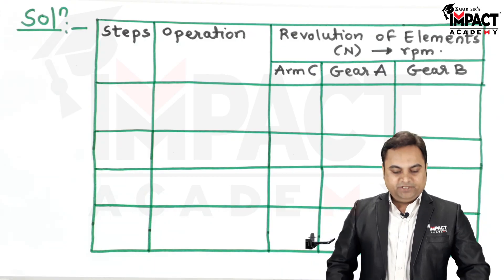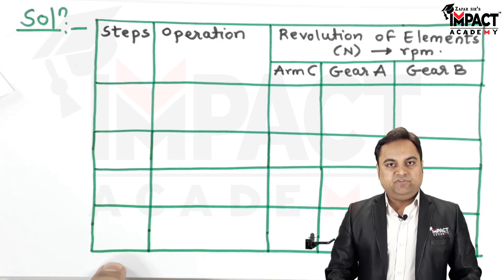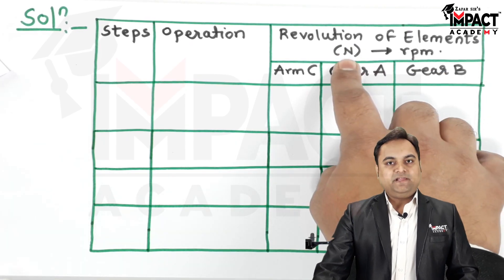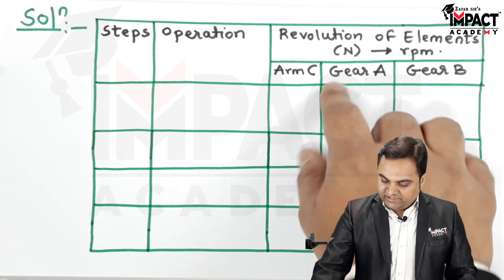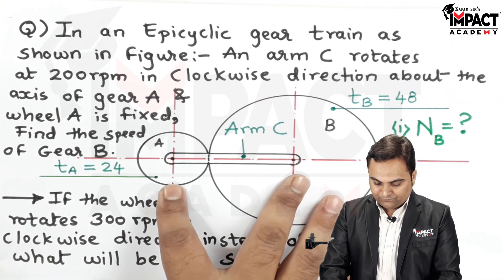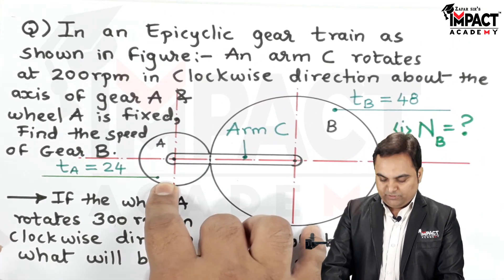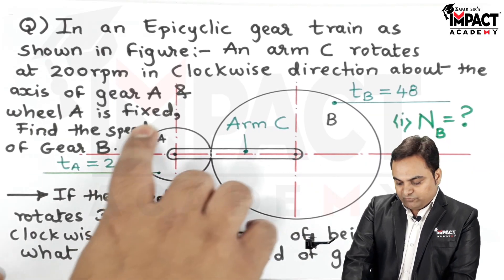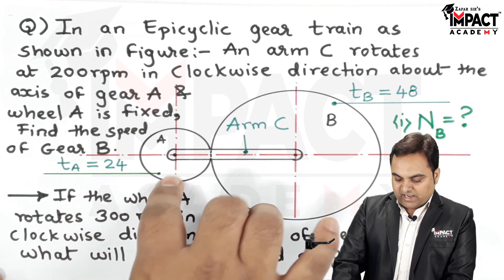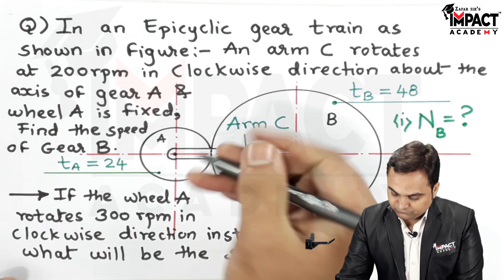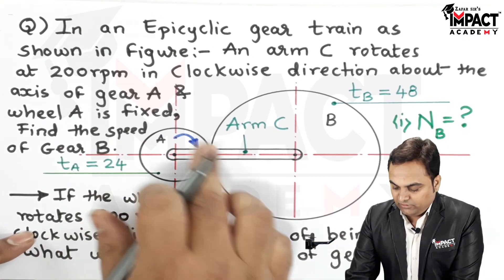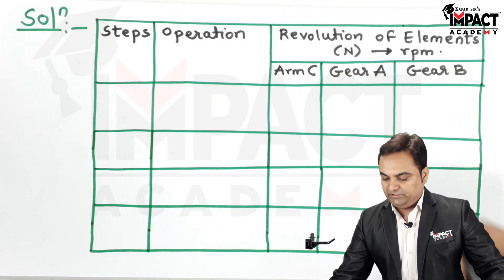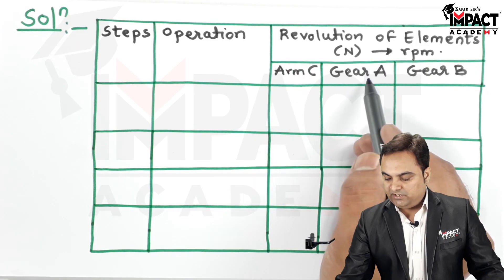We draw the table where the first column is the number of steps we are going to follow. Then we have the operation column. Then there is the revolution of elements, denoted by capital N in RPM. The sub-columns are for arm C, then gear A, then gear B. We assume that first the arm C is fixed and we rotate gear A in a clockwise sense. Since they are external gears, B rotates in an anti-clockwise sense.